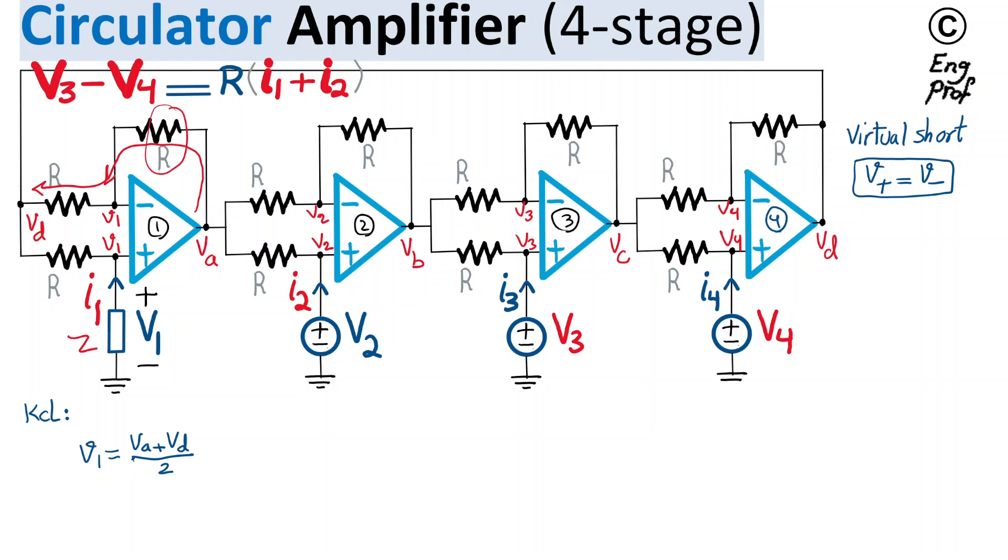Just to show it quickly because it takes only a few seconds, KCL or Kirchhoff current law says whatever current coming to a node should be equal to the current that is going out of the node. So current I that I'm showing on top should be equal to VA minus V1 divided by R. That's the current that is going through this resistor R. And then it should be equal to this other current, which is V1 minus VD divided by R. This R and R cancel out and then when we reshuffle things, we will get to exactly this equation.